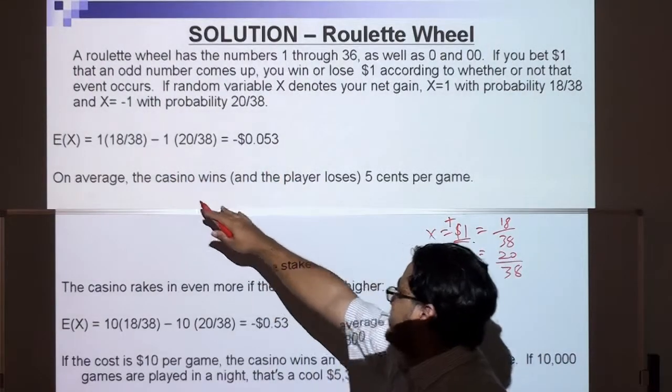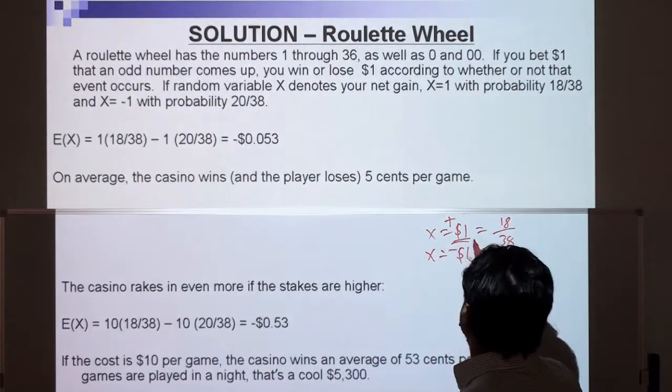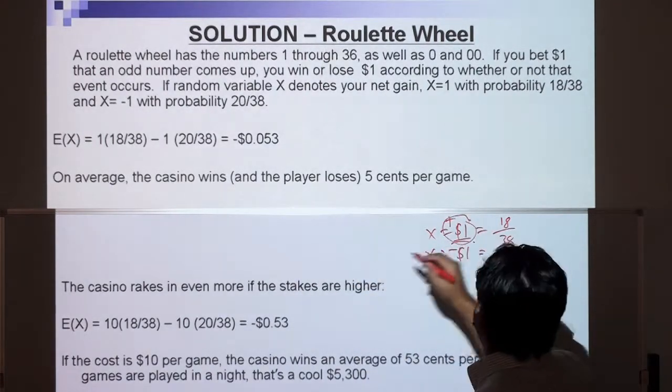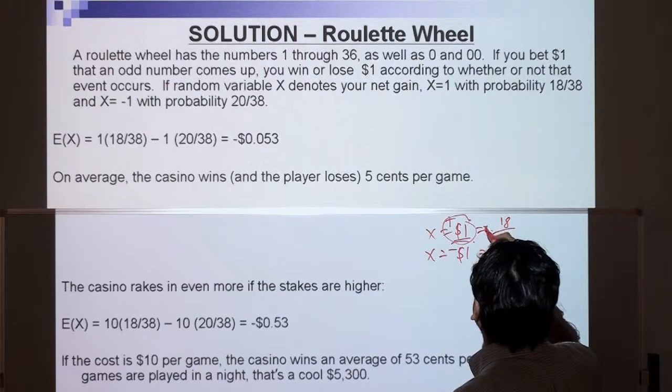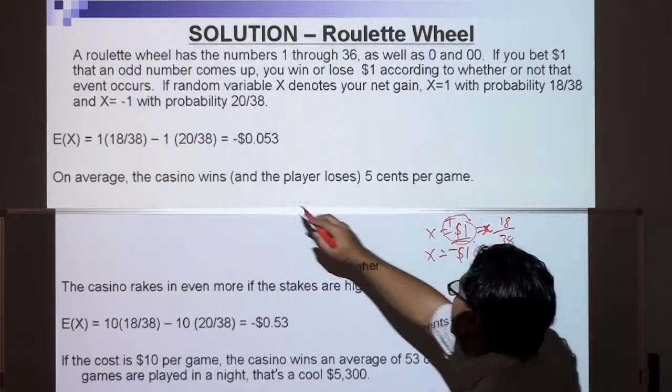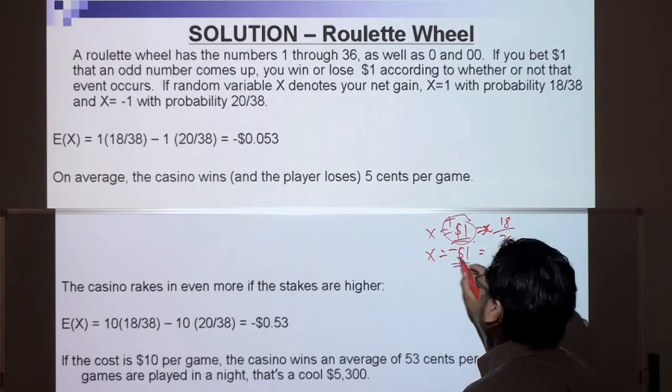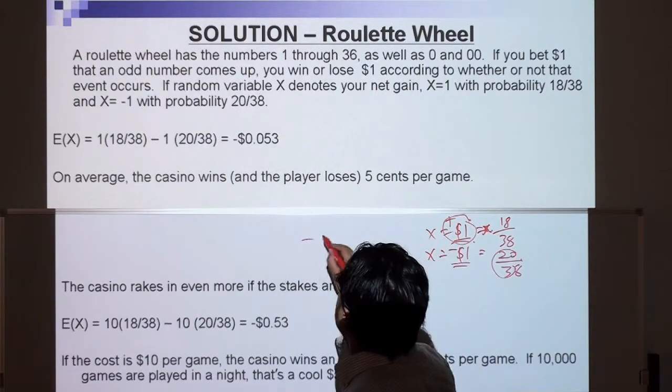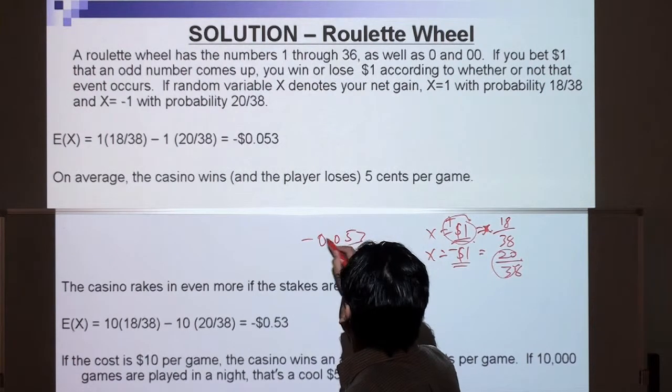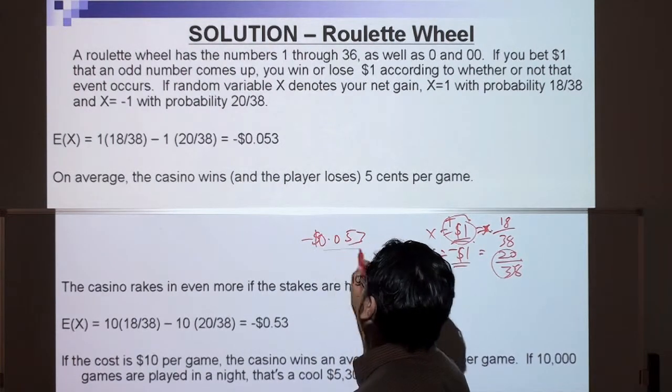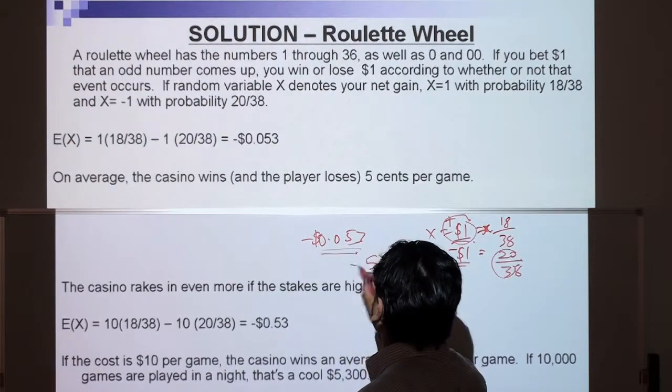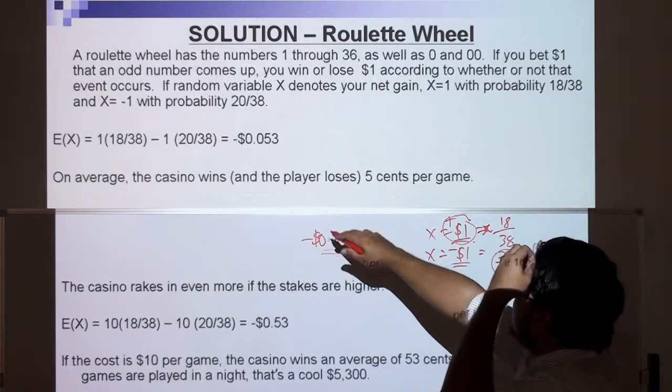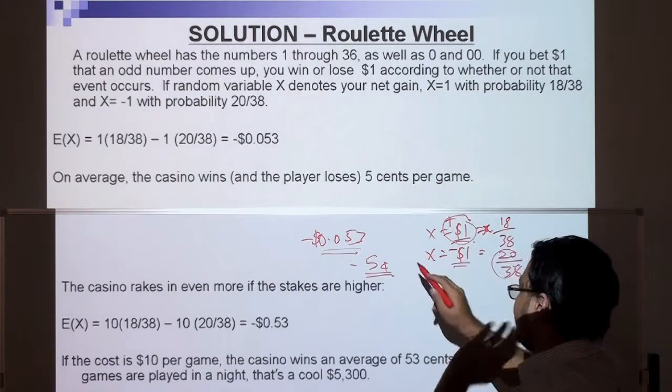Now the first thing we do is find the expected value, so we have x. We have 1 multiplied by the probability 18 over 38, and minus 1 multiplied by 20 over 38, and then we get negative 0.053. Notice it's negative, so most likely we will lose 5 cents for each game. On average, the casino wins and the player loses 5 cents per game.